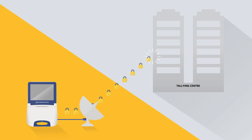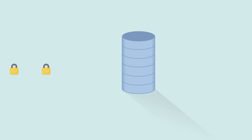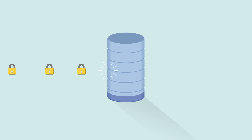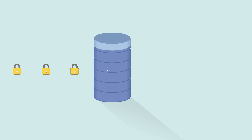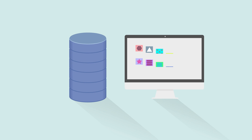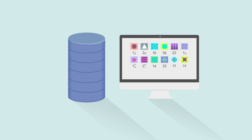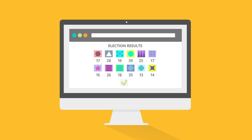At the tallying centers, the voting information is received, sources are validated, and if found authentic, the information is stored instantly. As soon as the system consolidates all of the votes received, results are ready to be published by authority.